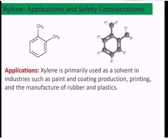Let's look at the applications. Xylene is primarily used as a solvent in industries such as paints and coating production, printing, and the manufacture of rubber and plastics. It's also essential in the production of purified terephthalic acid and is a key component in the production of polyester fibers and PET plastics.